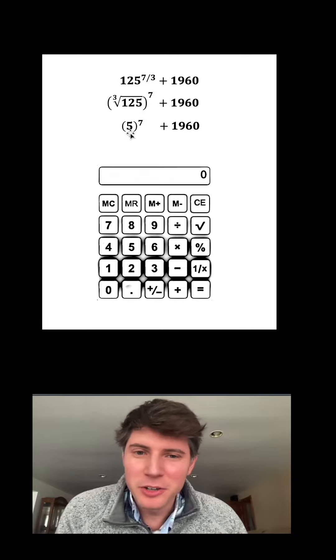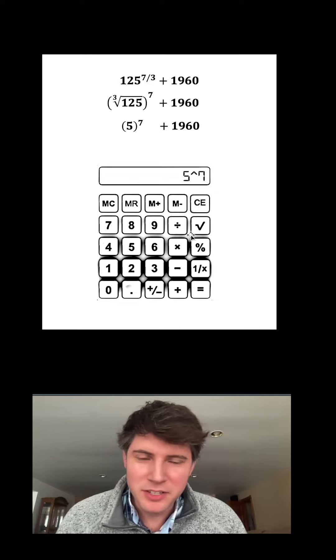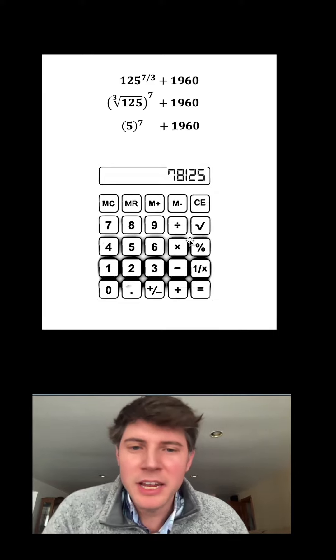But what is 5 to the 7th? Well, I don't know, so let's use a calculator. Plug in 5 to the 7th, and that gives us 78,125.